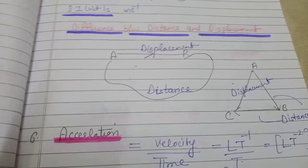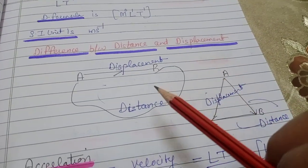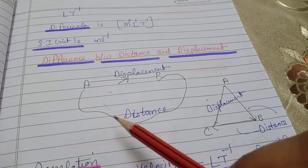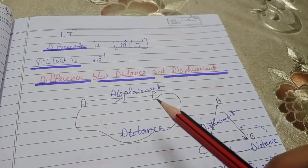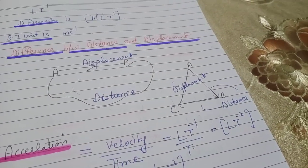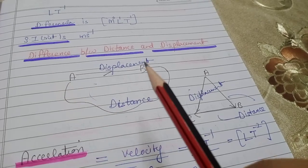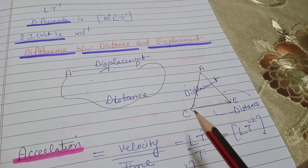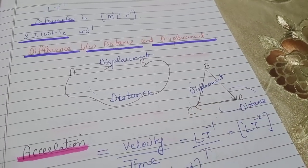आपको पता होगा — you have done this in ninth class — but अगर नहीं किया तो एक बार देख लीजिए, क्योंकि plus 1 में कोई भी basic नहीं छोड़ना है। Distance और displacement का फर्क: A से B तक जाना है, हम गली-गुमाकर जा रहे हैं — यह सारा longest path जो cover किया वो distance है। और एक particular direction में shortcut रास्ता लिया — वो displacement है। Longest path जिसकी कोई direction नहीं होती — वो distance। Shortcut path with a particular direction — वो displacement।